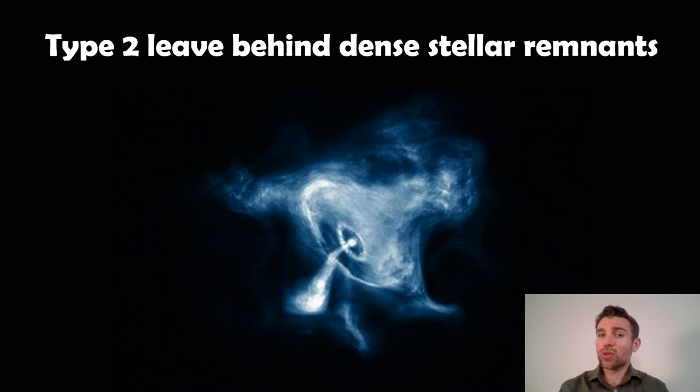Type 2s do leave behind some stellar remnant. Here you've got a pulsar, the pulsar is actually right in the center there and you've got some jets coming out and all the other stuff going off there. You would get a pulsar, a neutron star, maybe a black hole if it was big enough, but a type 2 would leave behind some dense stellar remnant, not like the type 1a.